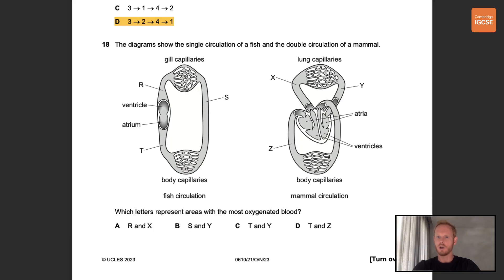Number 18. The diagrams show the single circulation of a fish and the double circulation of a mammal. Which letters represent areas with the most oxygenated blood? So in fish, blood is ejected from the ventricle and becomes oxygenated in the gills. So the area with the most oxygenated blood is S. In mammals, deoxygenated blood from the right ventricle is pumped to the lungs through blood vessel X, the pulmonary artery. In the lungs, the blood is oxygenated before returning to the left atrium through blood vessel Y, the pulmonary vein. The correct answer is therefore B, S and Y.